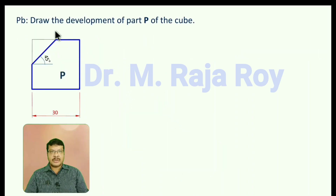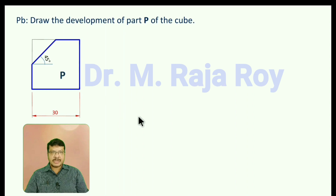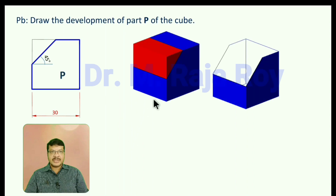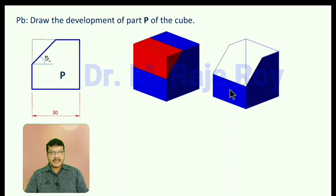Let us see this problem: draw the development of part P of the cube. For understanding purpose, I will show the three-dimensional view. The cube has a portion removed, and the remaining portion will be like this. For this, if you draw the development, you have to obtain these surfaces on the development. If you keep all the surfaces like this, you will get this portion of the cube.